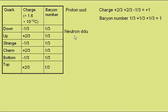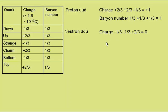The neutron consists of two down and an up quark, so the charge will be minus a third, minus a third, plus two thirds, giving the familiar charge of zero for the neutron. Baryon number again is one third plus one third plus one third, giving a baryon number of one.